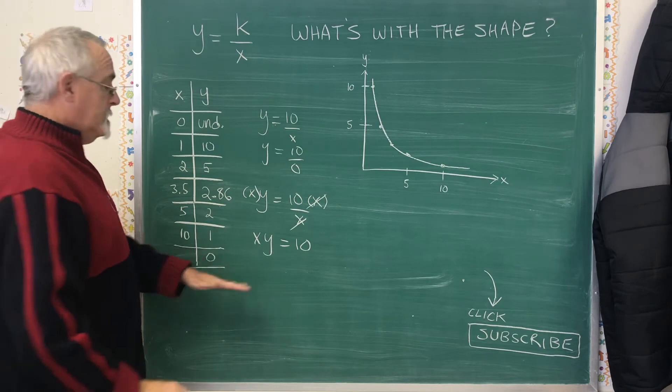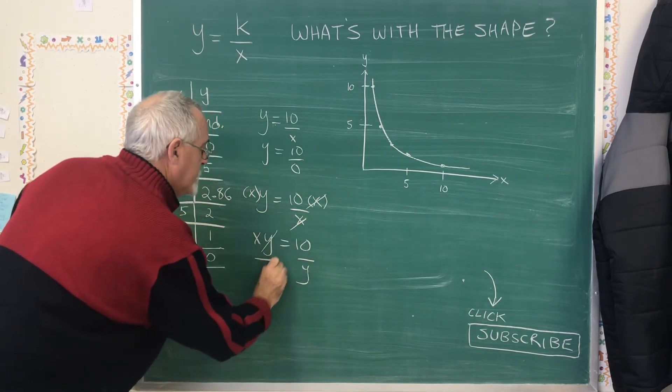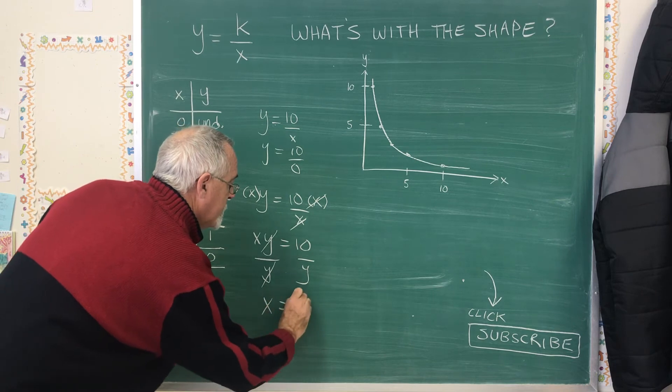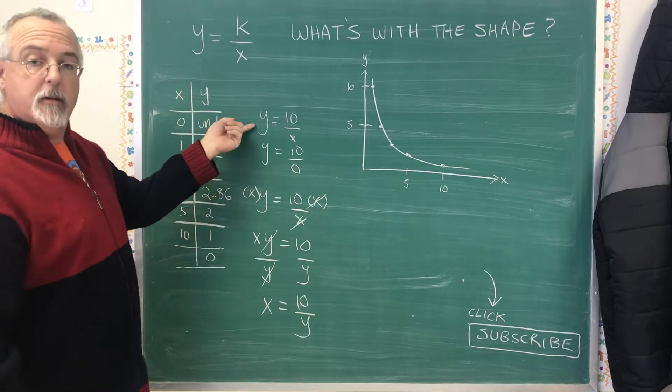But the x still isn't isolated. I have to divide both sides by y. These cancel. Now my x is isolated. And I have x equals 10 divided by y. Very similar to the original equation.